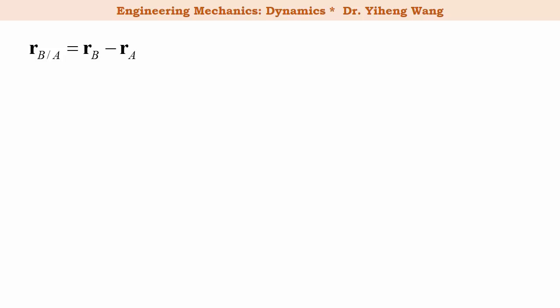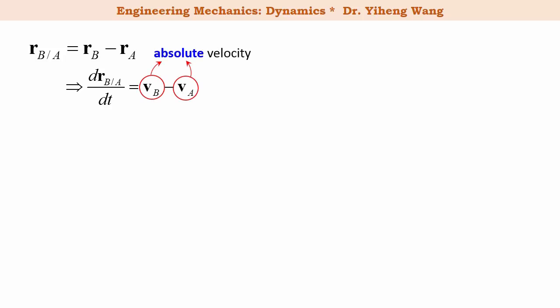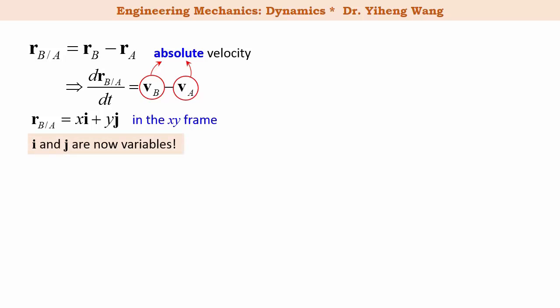Now to get the relative velocity equation, let's take the time derivative of this relative position equation. The right-hand side is the difference of the two absolute position vectors, so after we take the time derivative, the right-hand side is now the difference of the absolute velocities V_B and V_A. Focusing on the left-hand side, the relative position vector is represented in the x, y rotating frame. But the unit vectors i and j are variables now, because even though their magnitudes remain a constant one, they do change directions with respect to time. Therefore, when we take the time derivative of this relative position vector, we must now apply chain rule.